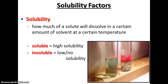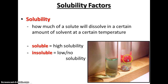Solubility: how much of a solute will dissolve in a certain amount of solvent at a certain temperature? Substances that are very soluble will completely dissolve, such as this bluish solution over here — everything completely dissolved, it's clear. However, this substance over here has this precipitate, this pinkish-reddish color. It doesn't dissolve, so it has low to no solubility — it's insoluble.